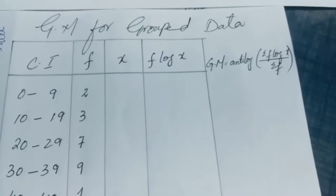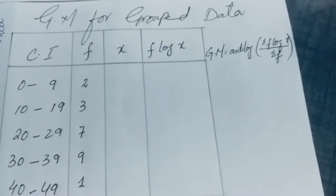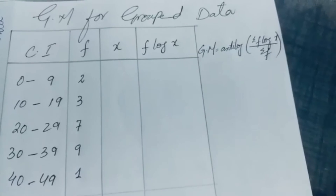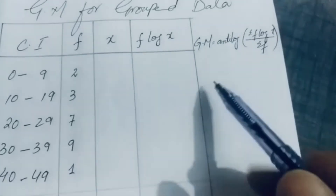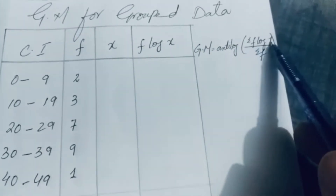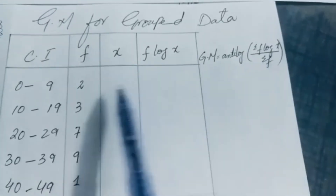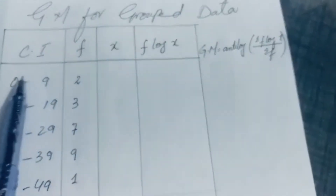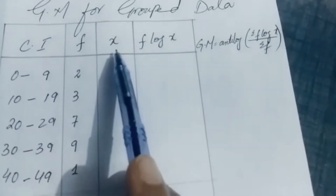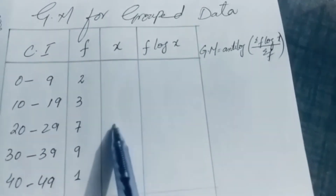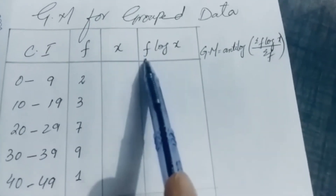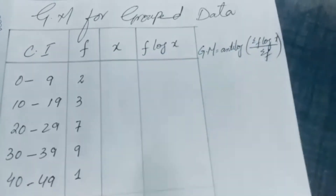Now I will explain how to find the geometric mean for grouped data. The formula is: geometric mean equals antilog of summation f log x divided by summation f. We are given class intervals and corresponding frequencies, and we need to find the midpoint column and the column of frequency multiplied by log x.